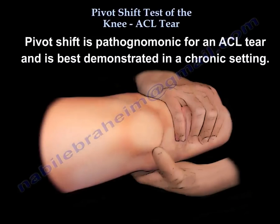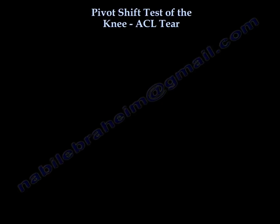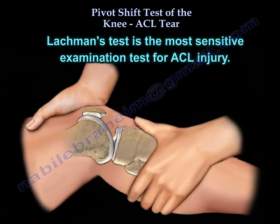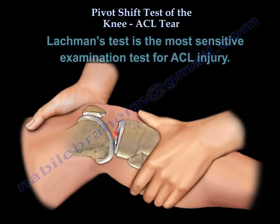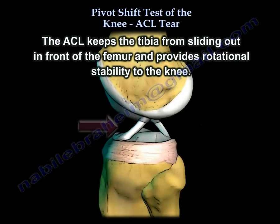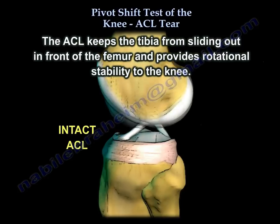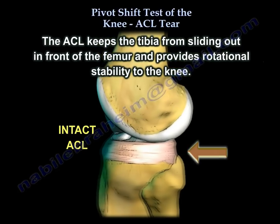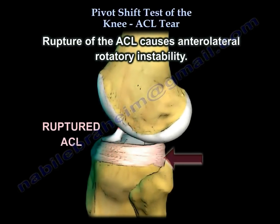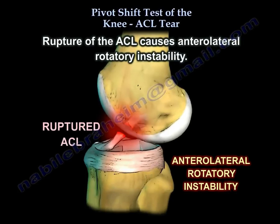Pivot shift is pathognomonic for an ACL tear and is best demonstrated in a chronic setting. The Lachman test is the most sensitive examination test for an ACL injury. The ACL keeps the tibia from sliding out in front of the femur and provides rotational stability to the knee. Rupture of the ACL causes anterolateral rotatory instability.